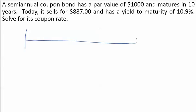A semi-annual coupon bond has a par value of $1,000 and matures in 10 years. Because it's semi-annual, there are 20 periods. We want to know what the coupon rate is given the price and the yield to maturity today.